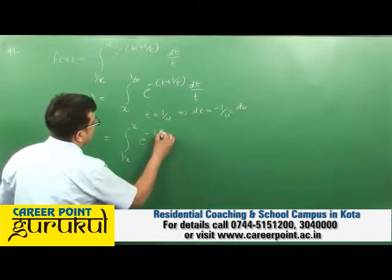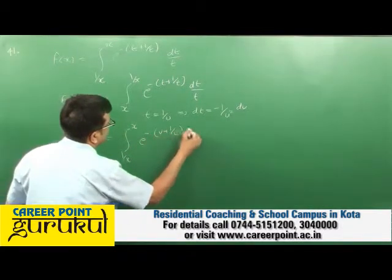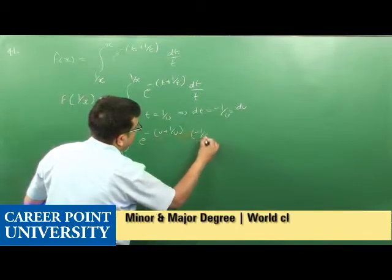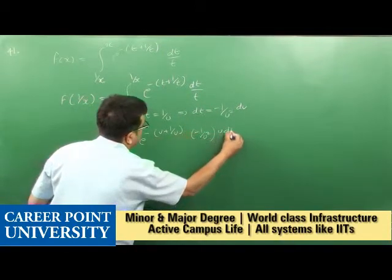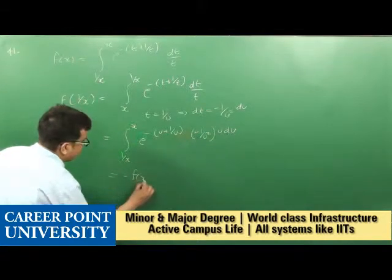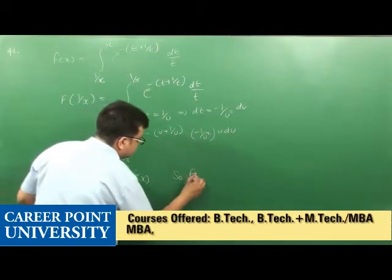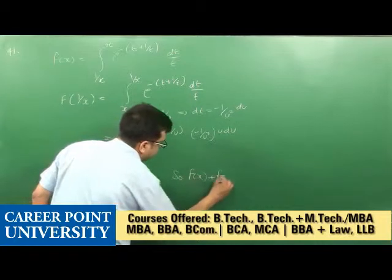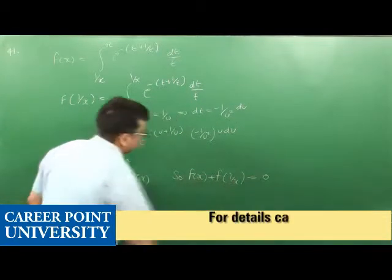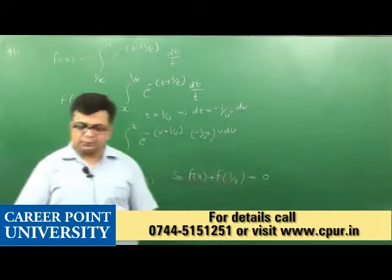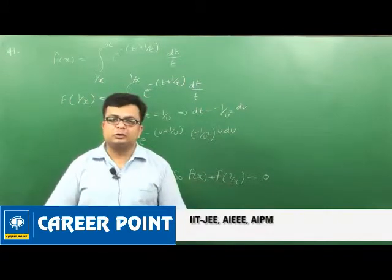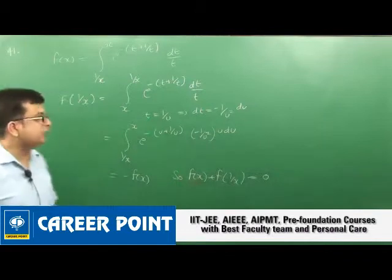After substitution, the integral becomes the integral from 1/x to x of e^(-(u + 1/u)) · (-1/u²) · u du, which equals -f(x). Therefore f(x) + f(1/x) = 0, so option C is also true.